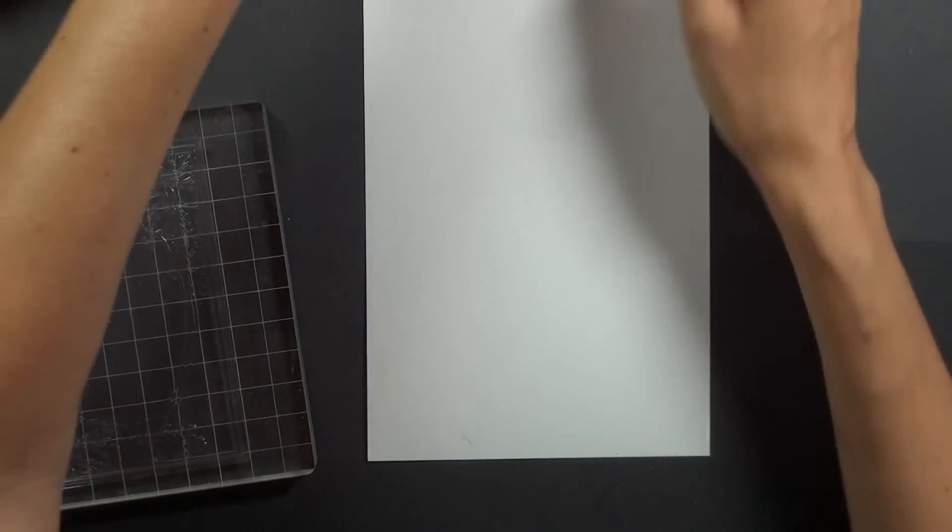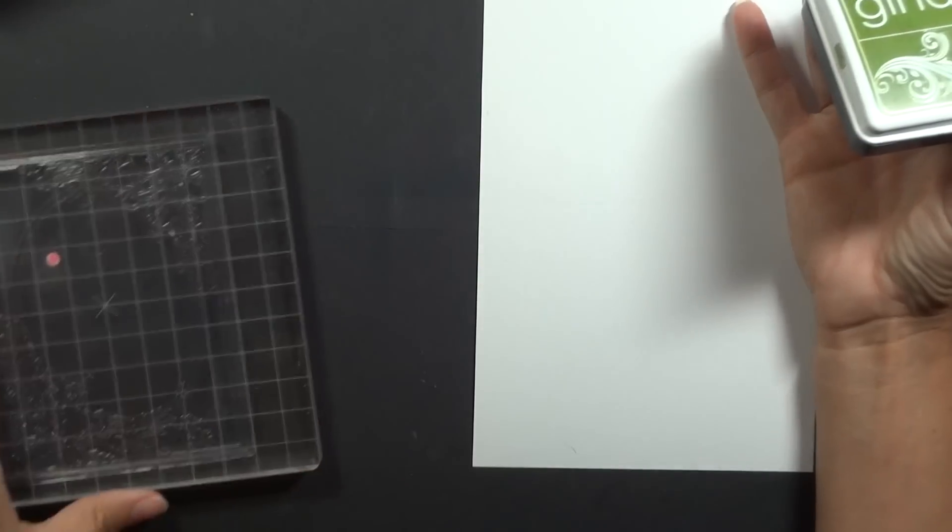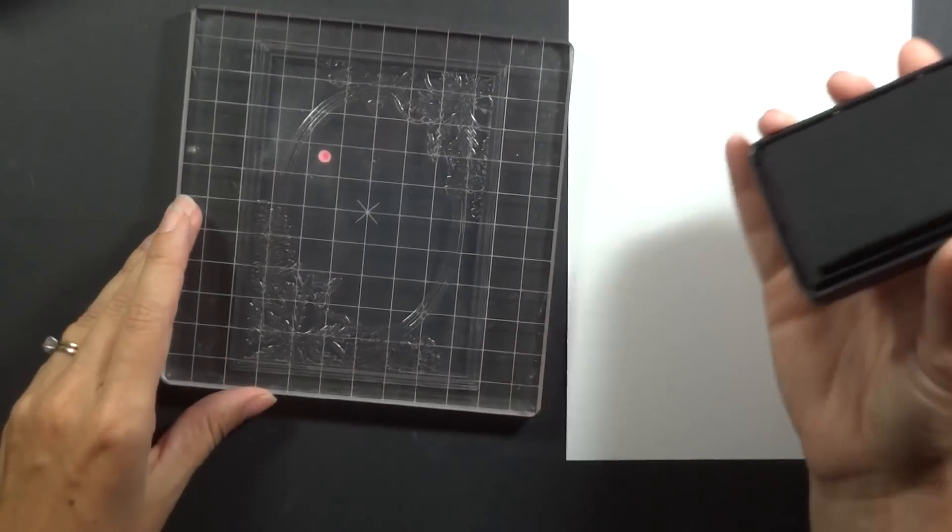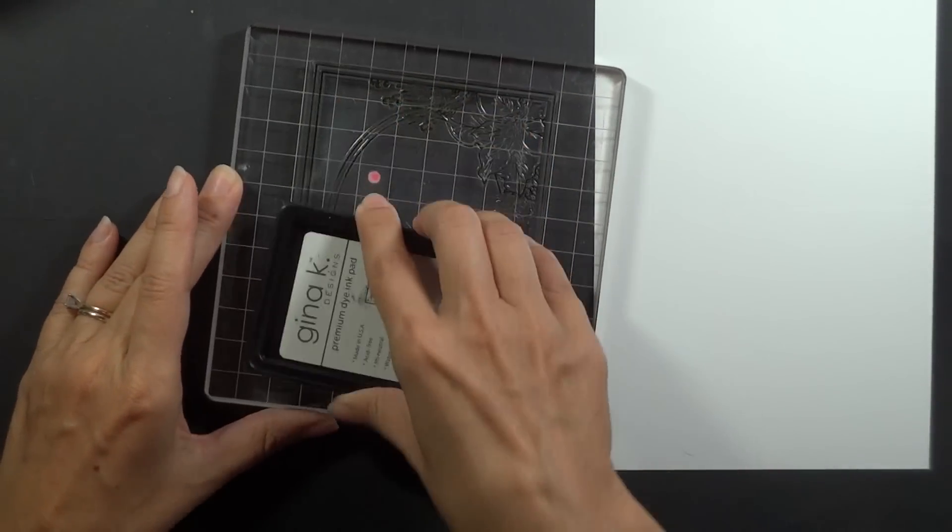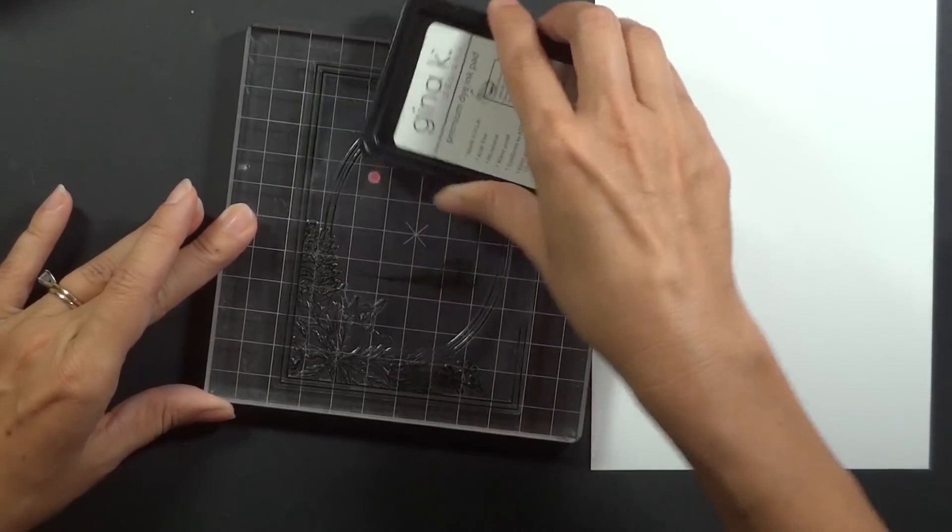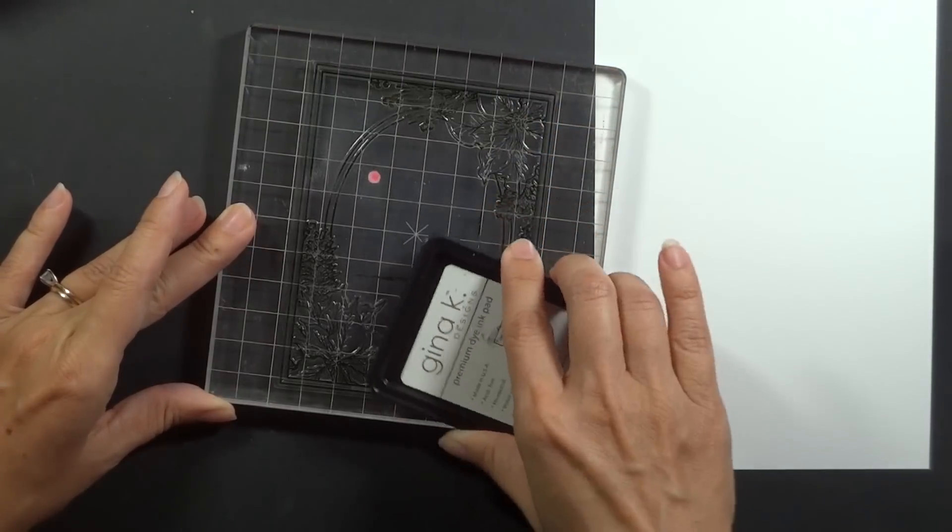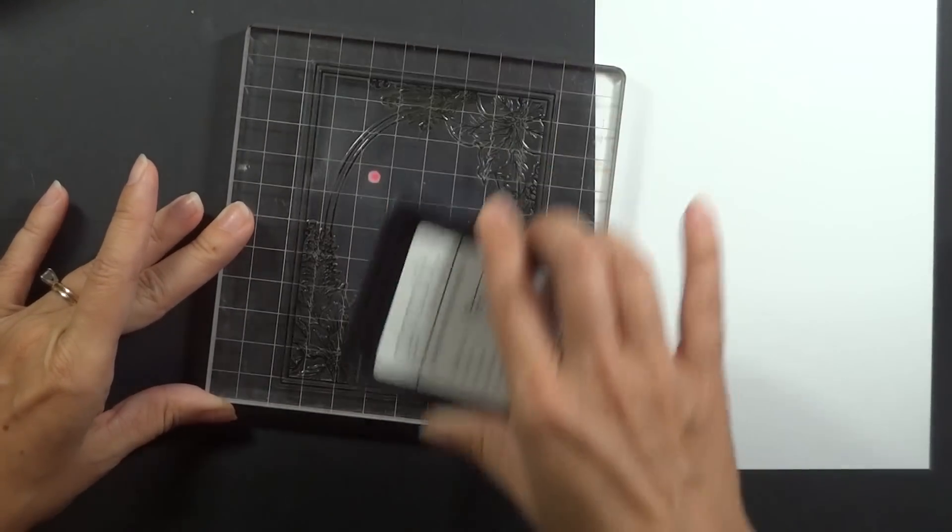So we're going to do a direct to stamp today where I'm just going to be using my pads and inking onto the frame. If you don't have all these different colors and you want to use your markers for these different colors, you can definitely do that. But I'm going to start with my lightest color, which is the base color for the frame, this fresh asparagus.